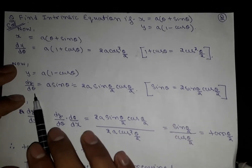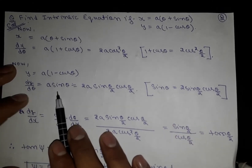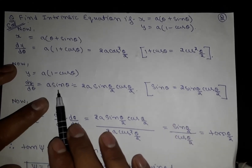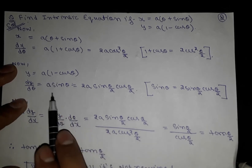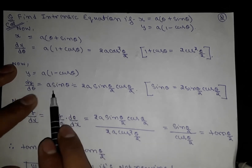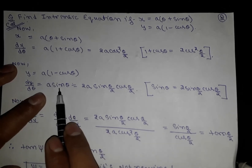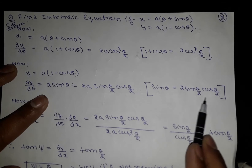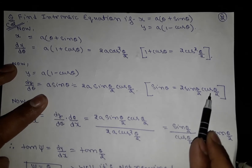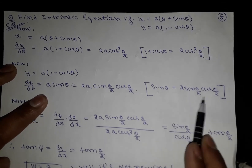So dy/dθ = a sinθ. We then write sinθ as 2sin(θ/2)cos(θ/2) using the double angle identity.